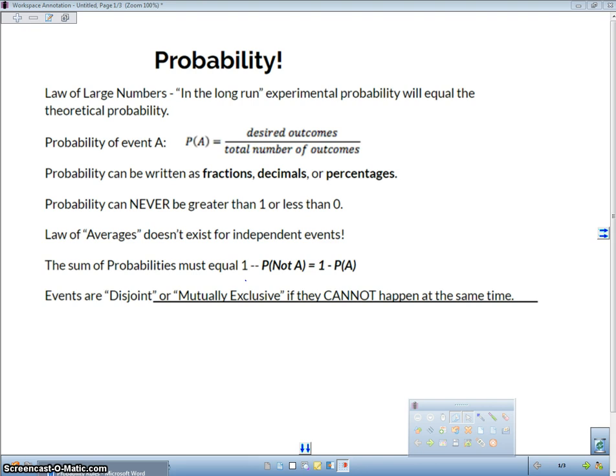So here's some basic rules. If you looked at my last video, I talked about the law of large numbers. In the long run, our experimental probability will end up equaling our theoretical probability. Now, in order to find the probability of any event, we're going to take the probability of any event is equal to the number of desired outcomes divided by the total number of outcomes.